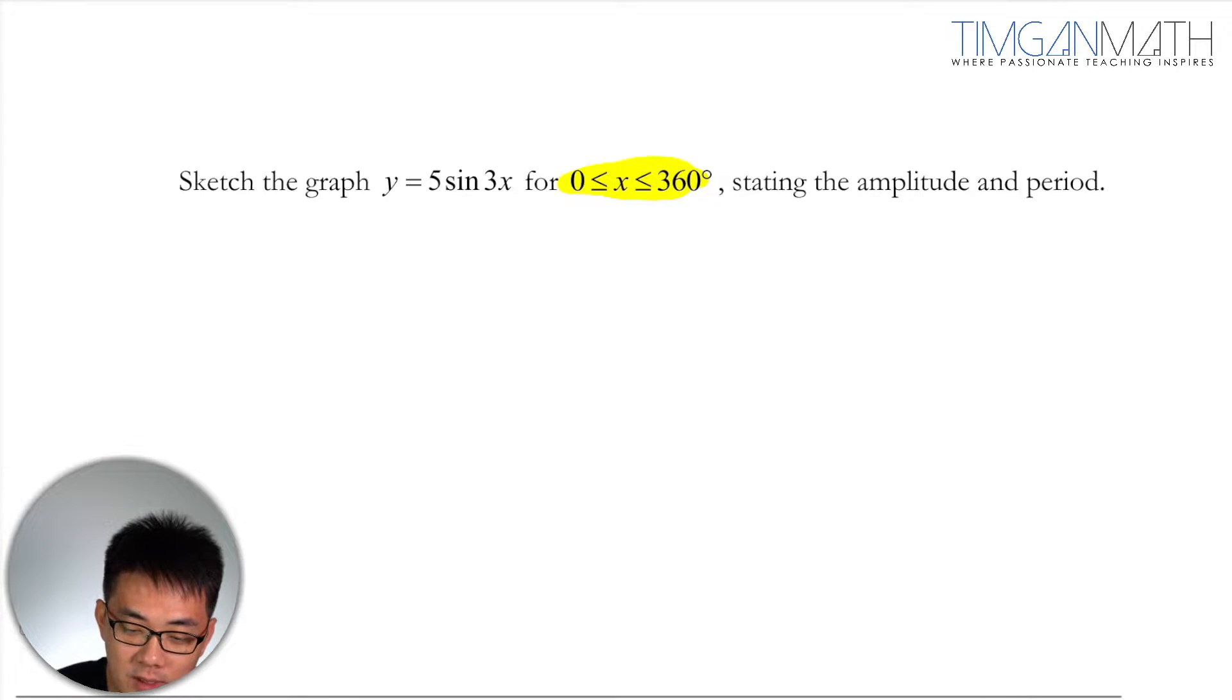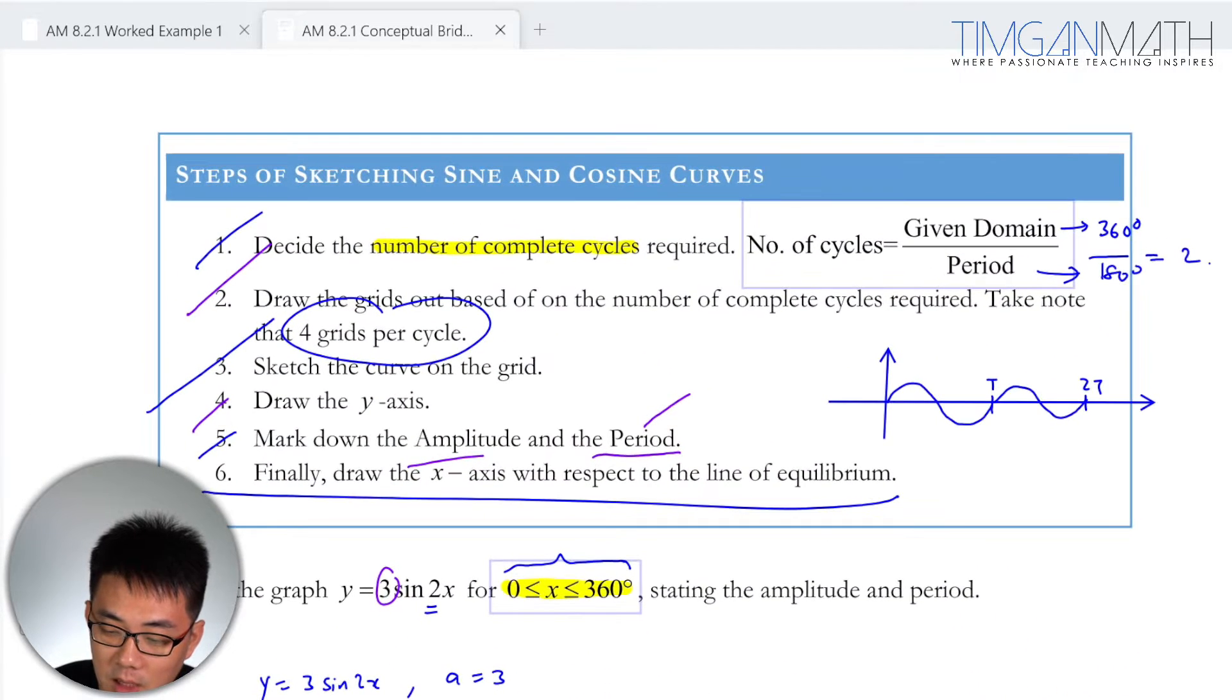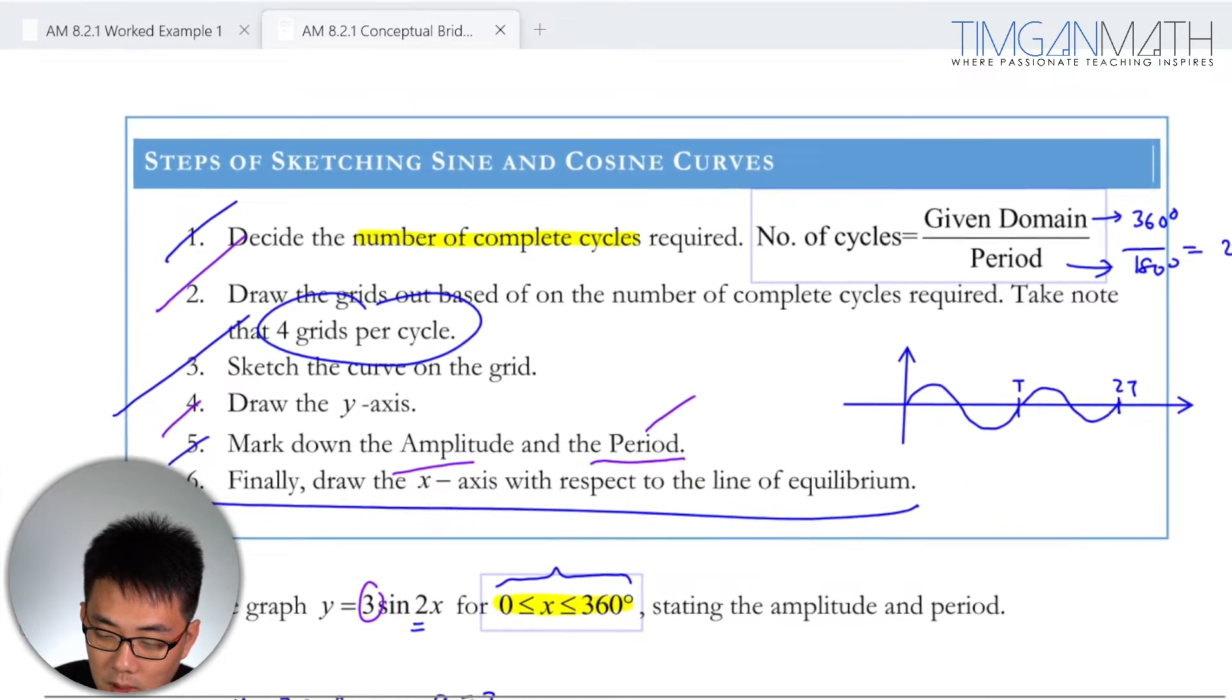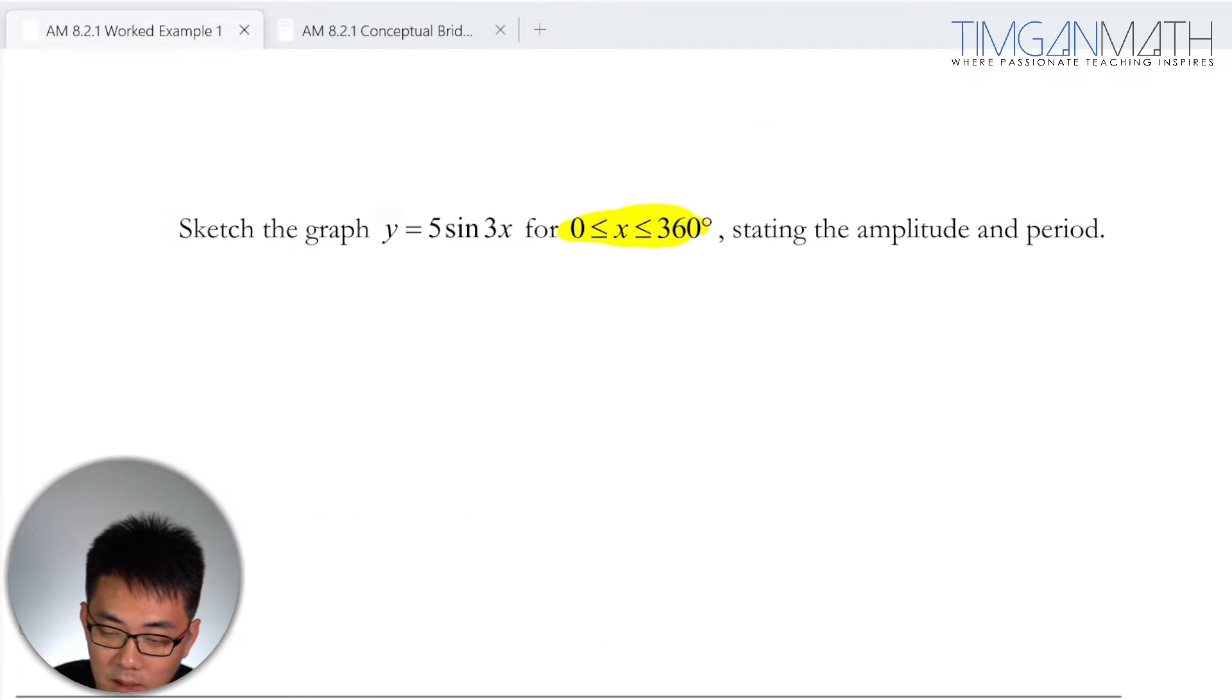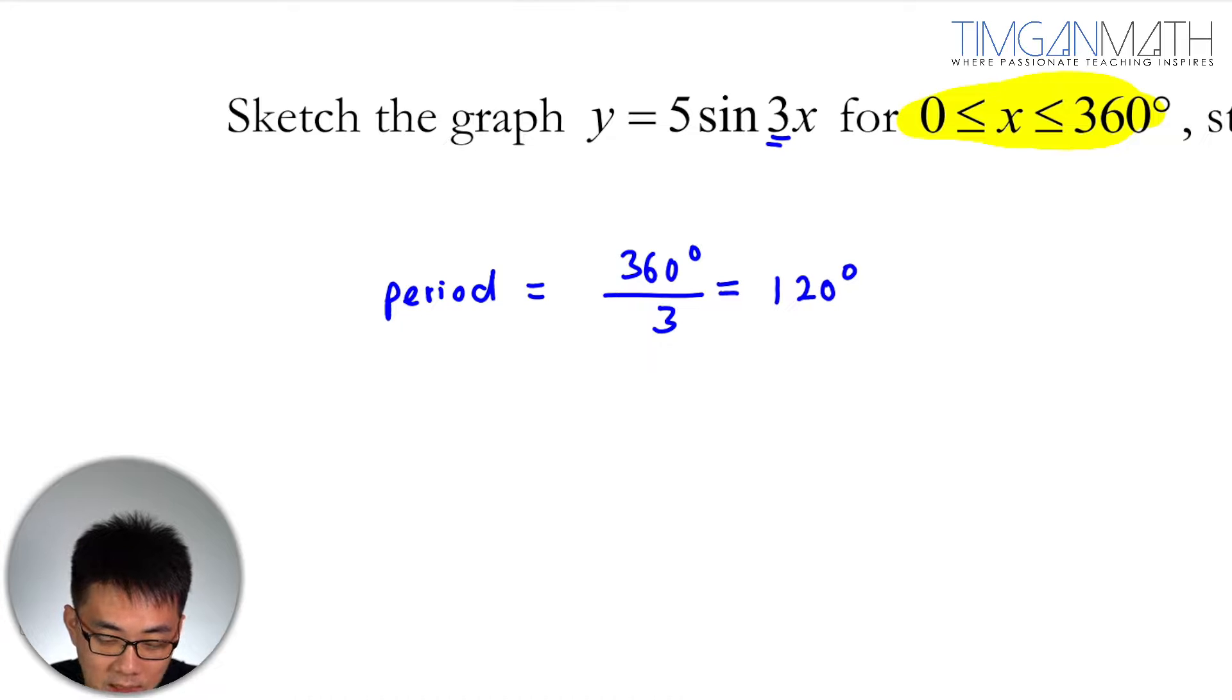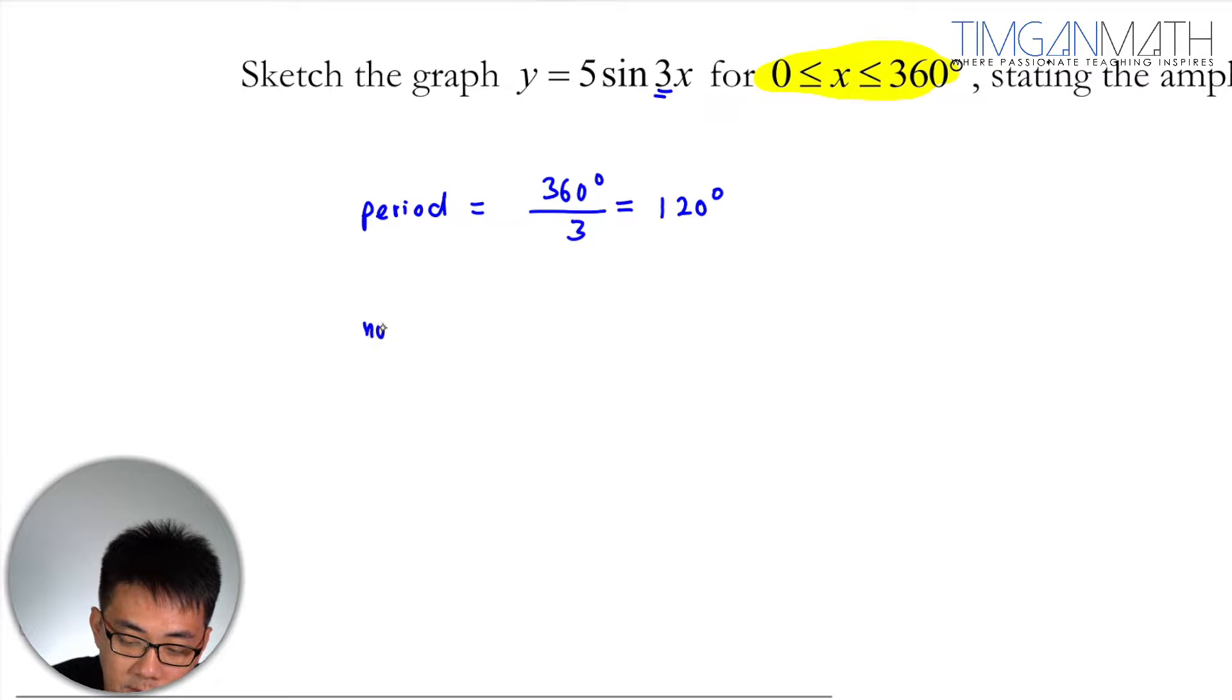Now the first step is obviously we need to decide the number of cycles here. So determine the number of cycles that you have. So I'm going to decide the period. Period is actually just 360 divided by 3. This is 120 degrees. So the number of complete cycles is actually 360 divided by 120 which is actually 3 cycles.